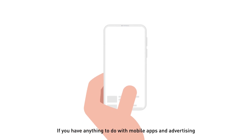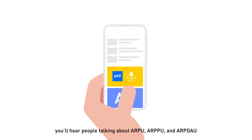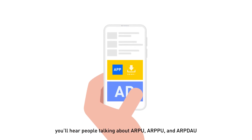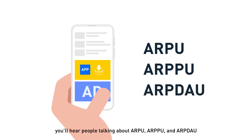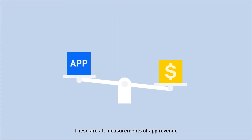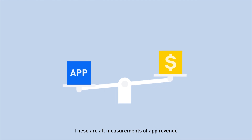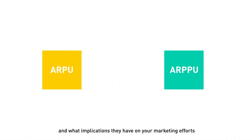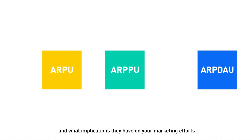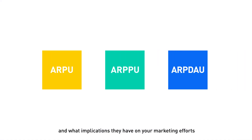If you have anything to do with mobile apps and advertising, you'll hear people talking about ARPU, ARPPU, and ARPDAU. These are all measurements of app revenue. Let's look at what each of them stands for and what implications they have on your marketing efforts.